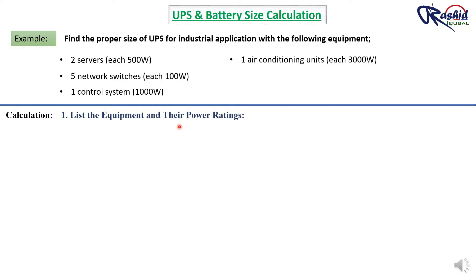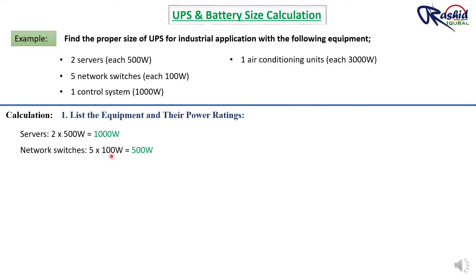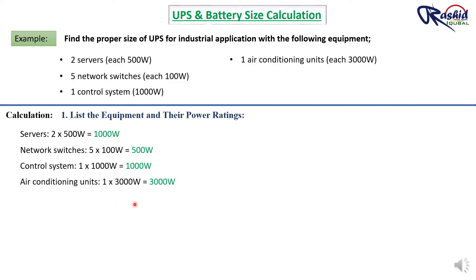List the equipment and their power ratings. We have two servers: 2 × 500 = 1000 Watts. Five network switches: 5 × 100 = 500 Watts. One control system: 1000 Watts. One air conditioning unit: 3000 Watts. Adding all wattage values, the total wattage is 5500 Watts.